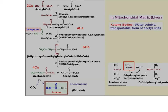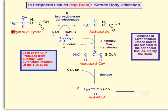Whenever somebody has ketoacidosis, they're exhaling a bunch of acetone, which gives their breath a fruity smell — that's one of the clinical indications of ketoacidosis. The brain loves glucose, but second to glucose it loves ketone bodies. Beta-hydroxybutyrate is first converted back into acetoacetate, producing a reducing equivalent, and then acetoacetate is converted into acetyl-CoA so it can enter the TCA cycle.